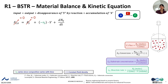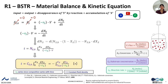Since we are working with a BSTR, there is no continuous inlet and continuous outlet, so the input and output terms are zero. We continue by rearranging: taking minus R_S multiplied by V to the left side, and leaving dN_S over dt on the right side. Using the concept of conversion — which is the change in moles of substrate compared to the initial substrate moles — we can rewrite this for the material balance.